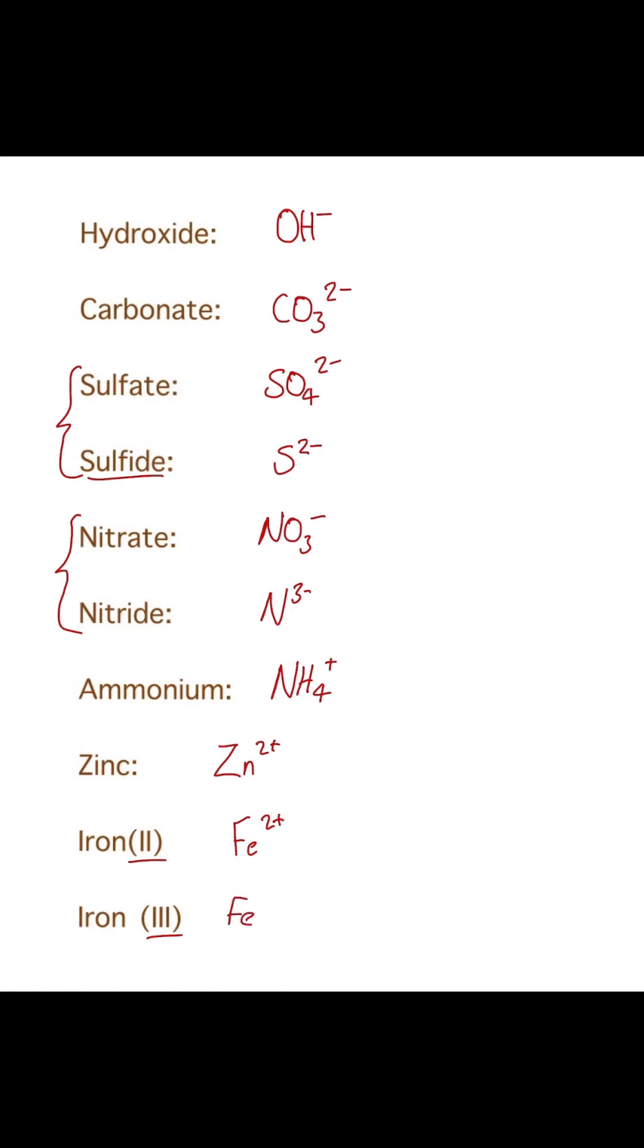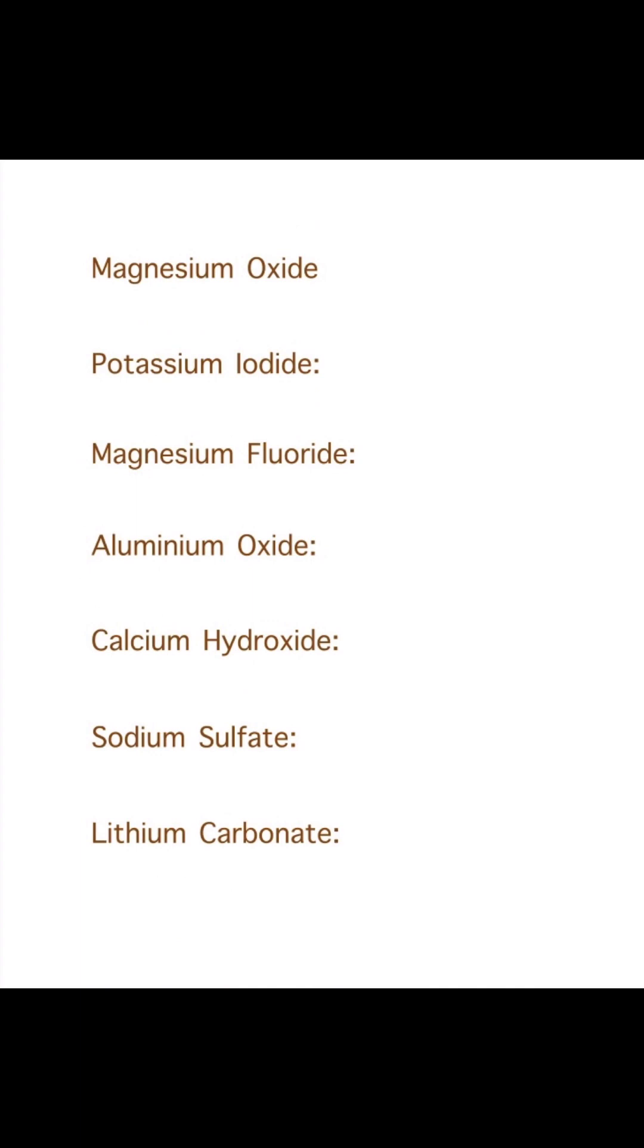Let's look at a couple of examples. Up here we have magnesium oxide. Magnesium is in group two, which gives us Mg2 plus. Oxygen is in group six, giving us O2 minus. We do our method of swapping the numbers around, which gives us Mg2O2. That's a ratio of 2 to 2, which is the same as 1 to 1, so you can simplify that to make it MgO.